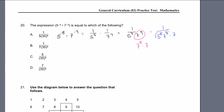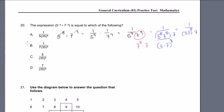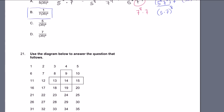Now if I group this — I can do that because multiplication is associative — it doesn't matter what order I do it. This is the same thing as 5 times 7 to the 8th power, because a to the x times b to the x is the same thing as (ab) to the x. So this is equal to 1 over 35 to the 8th power times 7. That is choice B — they just switched the order of the 7 and the 35 to the 8th power.